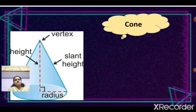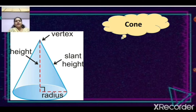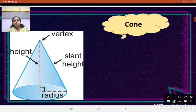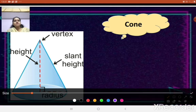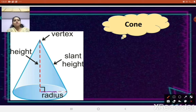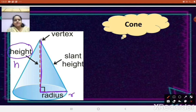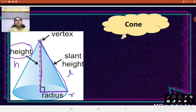For a cone, let us identify the terms required. Looking at the figure, the bottom is in a circular shape — this is the radius of the bottom, which we will take as R. Then this is the height, which we will consider as H, also called the perpendicular height. And this is the slant height, which we will denote by L.